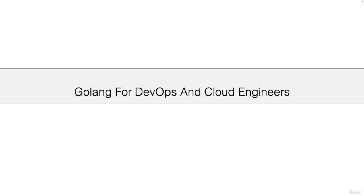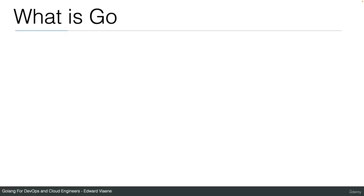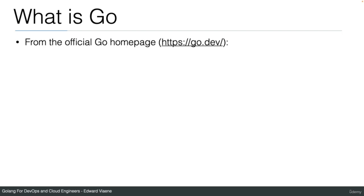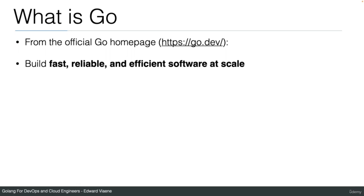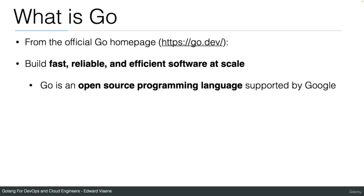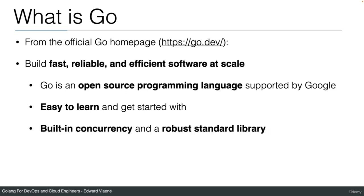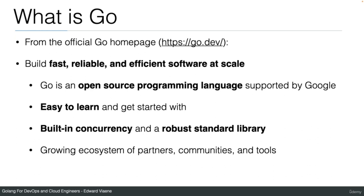Welcome to my Golang for DevOps and Cloud Engineers course. What is Go or Golang? From the official Go homepage, go.dev: Build fast, reliable and efficient software at scale. Go is an open source programming language supported by Google. It's easy to learn and to get started with. Built-in concurrency and a robust standard library, and a growing ecosystem of partners, communities and tools.